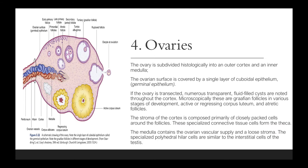The ovary is subdivided physiologically into an outer cortex and an inner medulla. The ovarian surface is covered by a single layer of cuboidal epithelium, also called the germinal epithelium. If the ovary is transected in cross-section, we see numerous transparent fluid-filled cysts in the cortex area. Microscopically, these are graafian follicles in various stages of development. We also see an active corpus luteum, a regressing corpus luteum, and some atretic follicles.